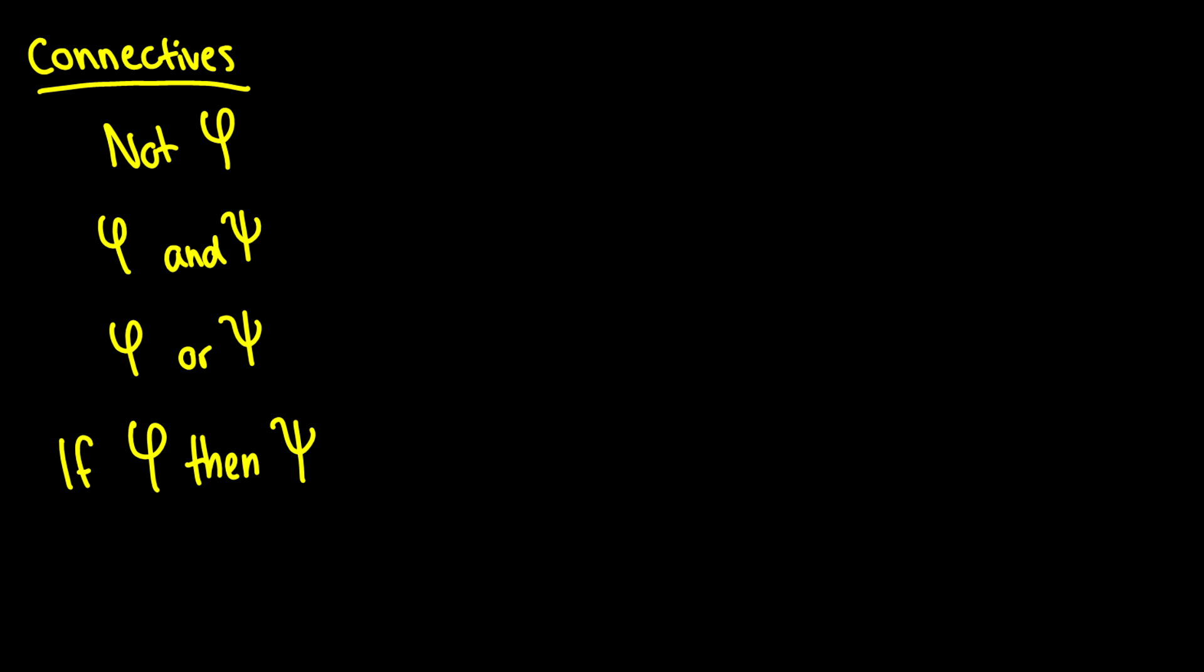We also have connectives. So I'm introducing some Greek letters here. I like Greek letters because these are what we use for meta variables in logic. So these are the letters phi and psi. And when we want to talk about things, we need ways of joining our statements together. So before we had R for it is not raining, or sorry, we have R for it is raining.